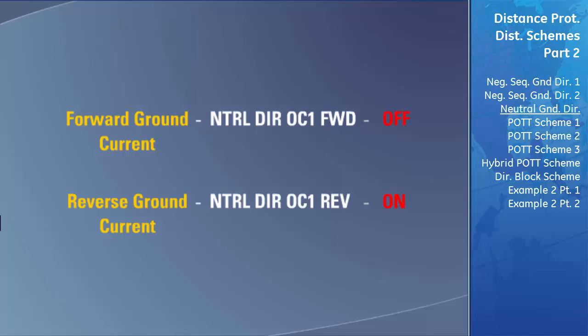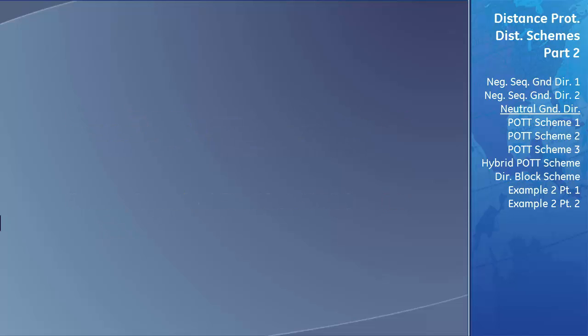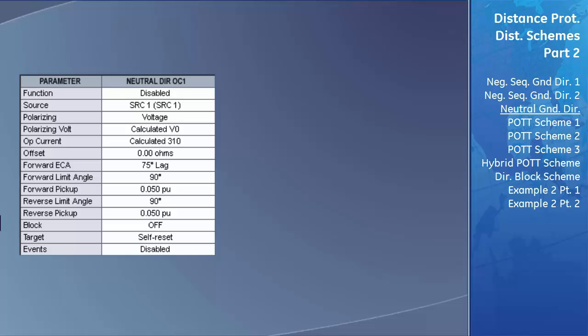We will now configure and explain all of the settings to ensure the neutral directional overcurrent will operate correctly. You must first configure the source of current and voltage that will be used to detect the direction of the ground current. The source you are selecting must have previously been set. A detailed description for configuring the source can be found on the GE Multilin UR Applications 1 Learning CD.